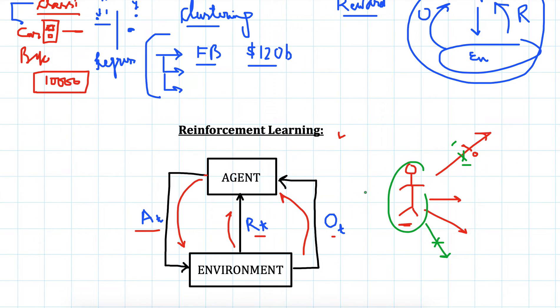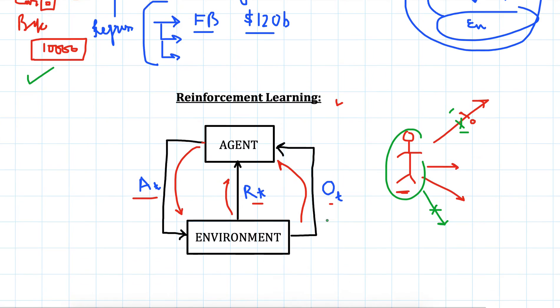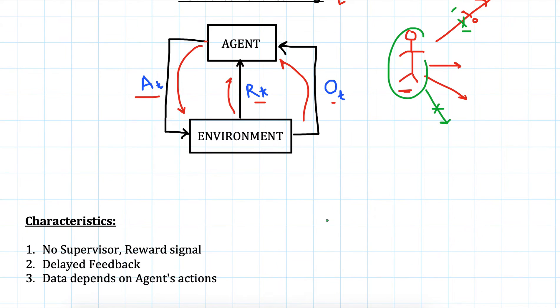Here the data it receives depends on the action the agent takes, whereas in these cases we had fixed set of data irrespective of how the network starts training its weights. This is one of the key concepts that you should keep in mind.